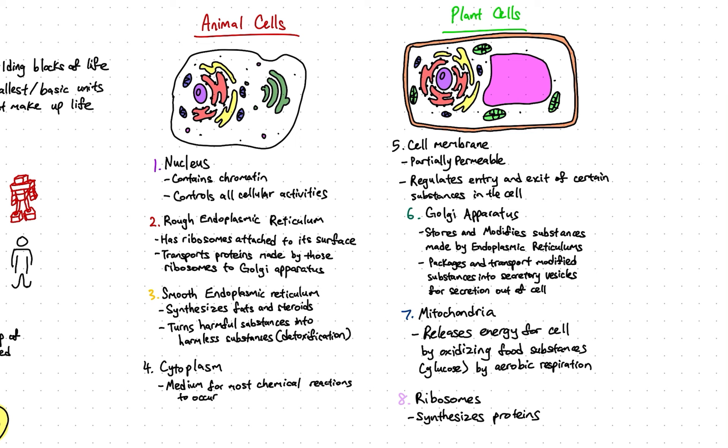Next, we have the Golgi apparatus, which stores and modifies the substances made by the smooth and rough endoplasmic reticulum, and then packages and transports these modified substances into secretory vesicles for secretion out of the cell.